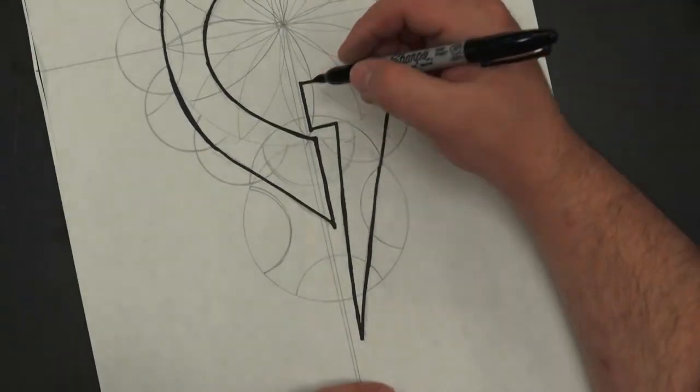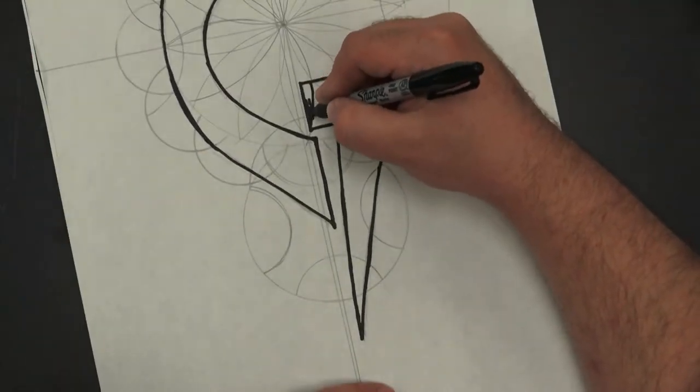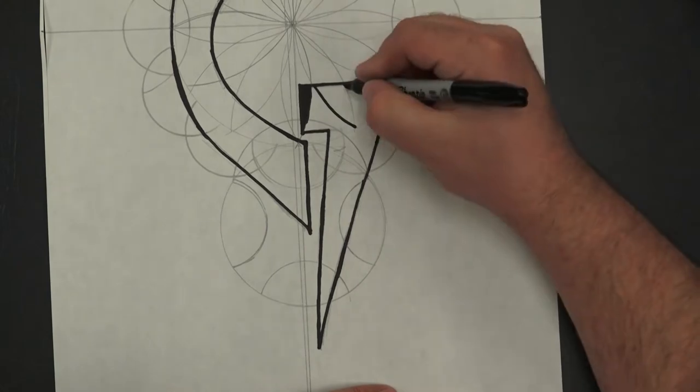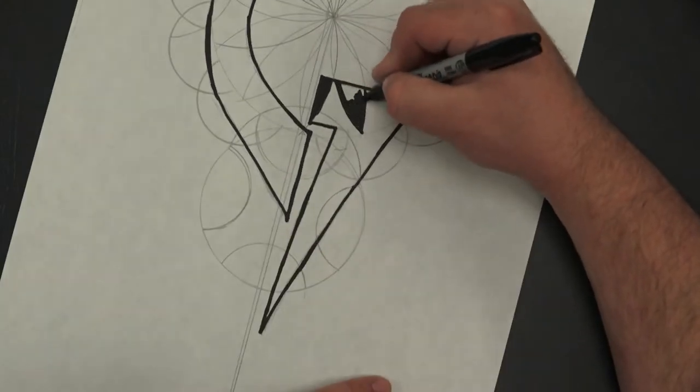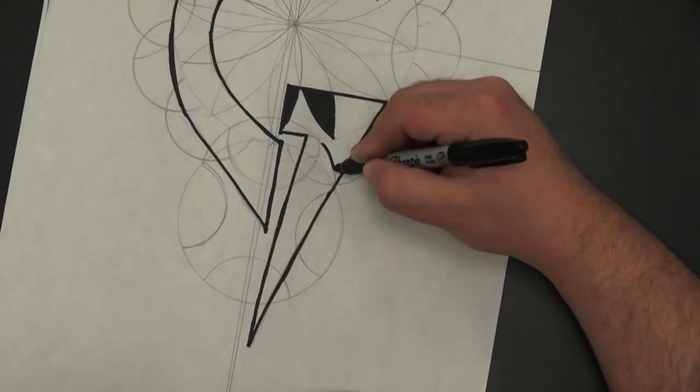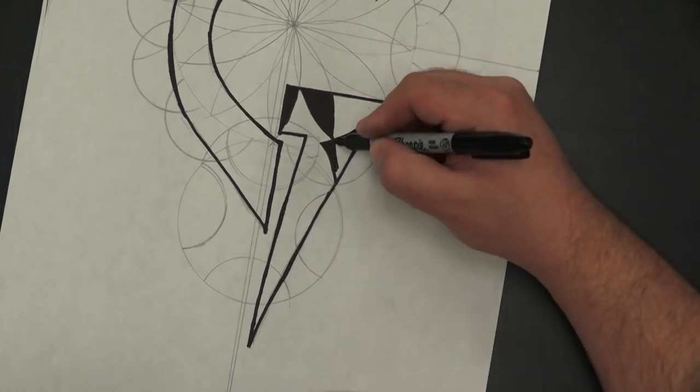his usage of math and understanding of math and concepts and culture was hugely relevant. It stuck with me a lot in the way that he used the golden ratio, golden rule, golden mean